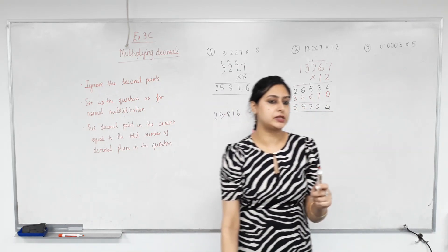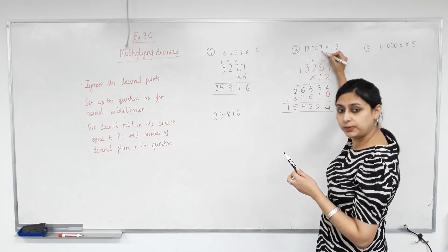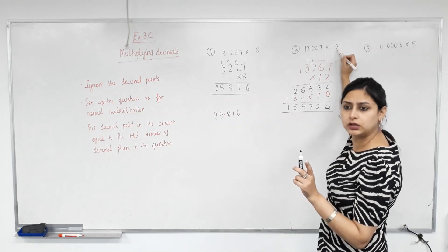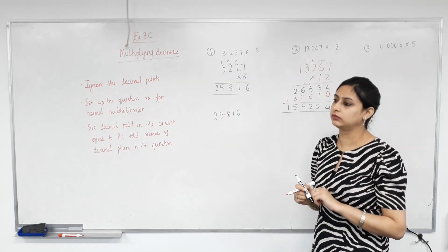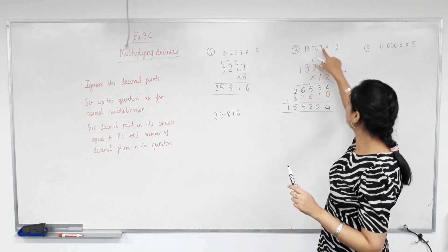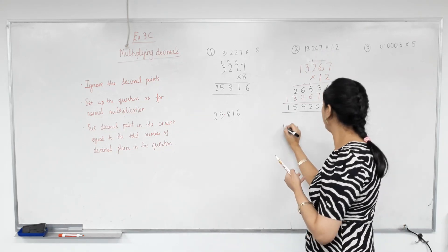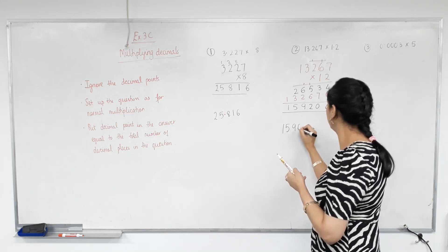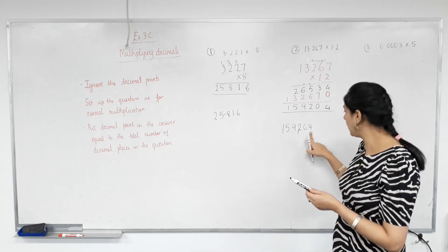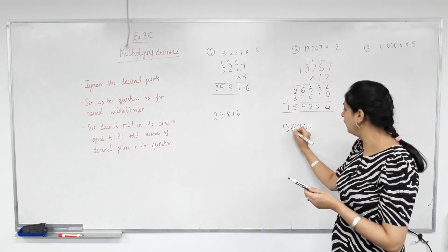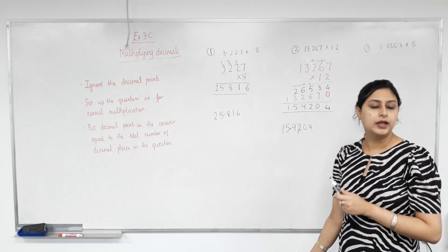Now, we count the total number of decimal places with both of these. So this one had 1, 2, 3 decimal places, and this one has 1. So what's the total? 4. So how many decimal places will the answer have? 4. So 1, 2, 3, 4. The answer will have 4 decimal places. So I'll write 1, 5, 9, 2, 0, 4. So counting from the first digit, 1, 2, 3, 4. The answer is 15.9204. Easy?